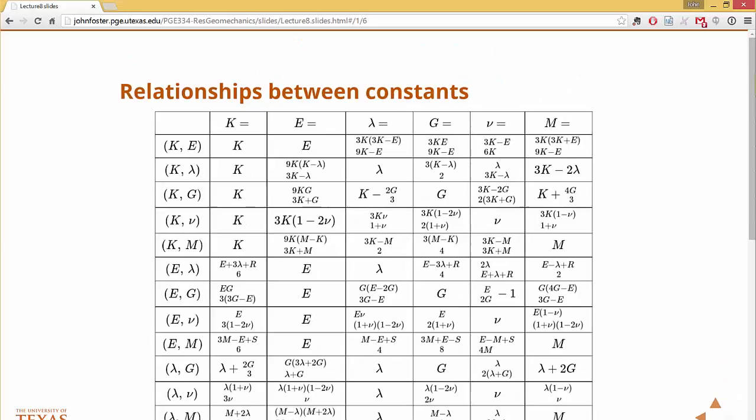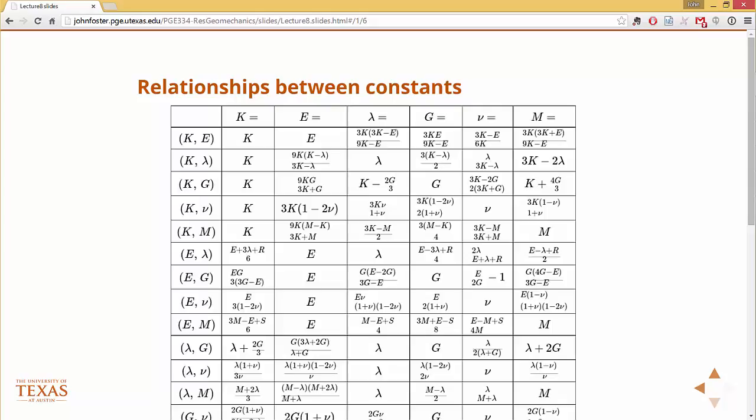I'll give you this chart. We've talked about K is the bulk modulus, E is the Young's modulus, lambda is Lamé's constant, G is the shear modulus, and V is the Poisson ratio.